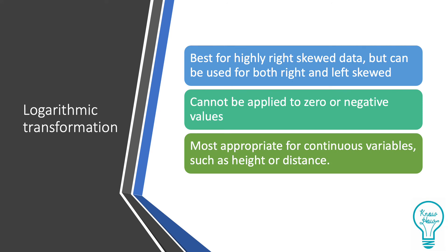The logarithmic transformation is the most commonly used type of data transformation. It usually works best for highly right-skewed data but can be used for both left and right-hand skewedness. It cannot be applied to zero or negative values and it is most appropriate for continuous variables such as height or distance.